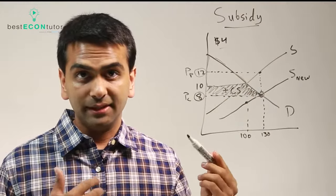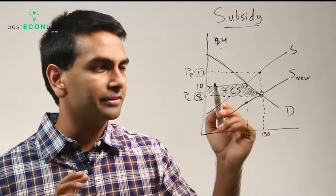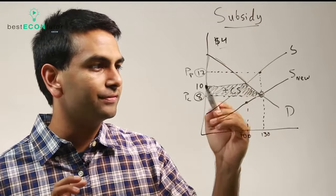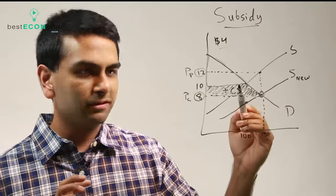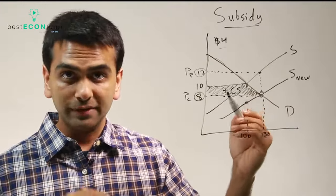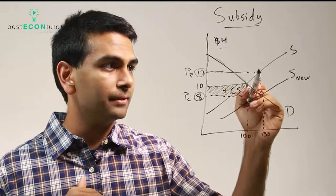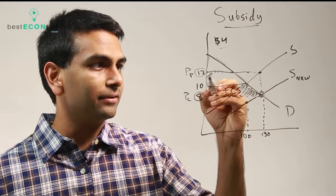Now, to look at the increase in producer surplus, let's ignore this shaded region for now. The old producer surplus used to be this much—everything below ten, above the original supply curve. And now, it's everything below twelve, because they're getting more money. So everything below here and above that. That's going to increase by this amount.